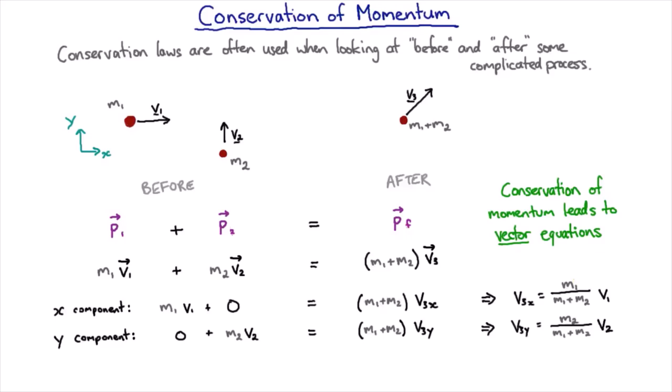Now once again we do a quick check of units. We've got mass divided by mass so that gives us nothing and we've got velocity equals velocity so that works well and it's fairly obviously the same on the bottom line.